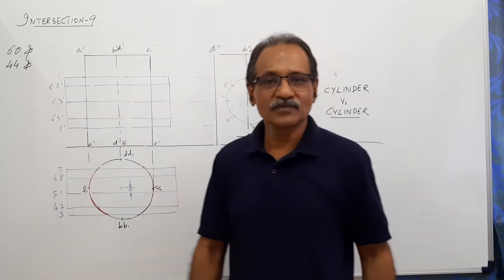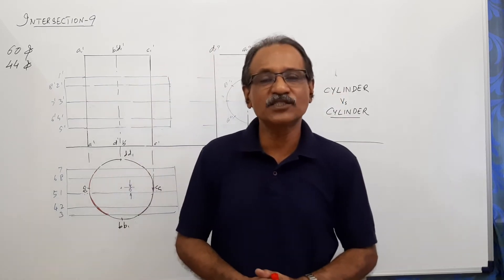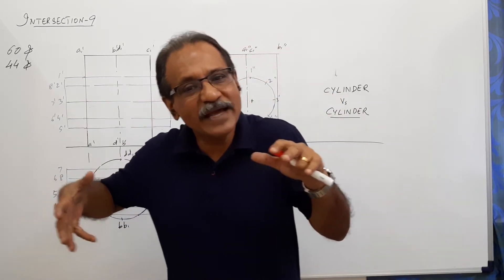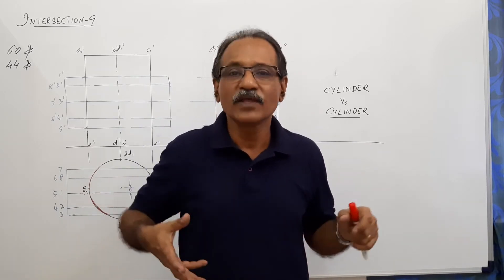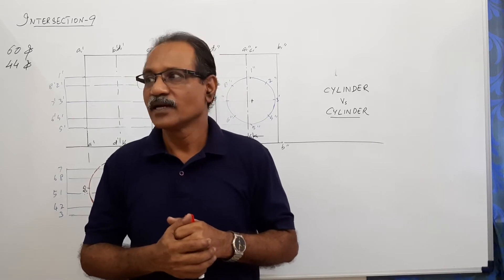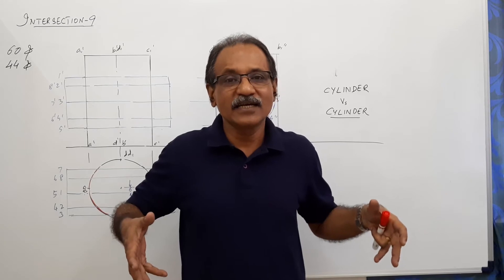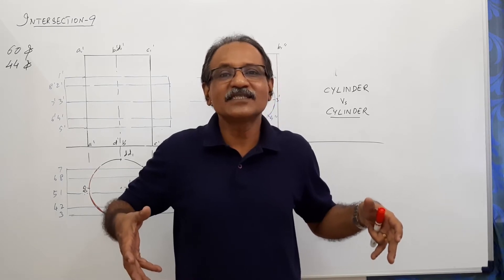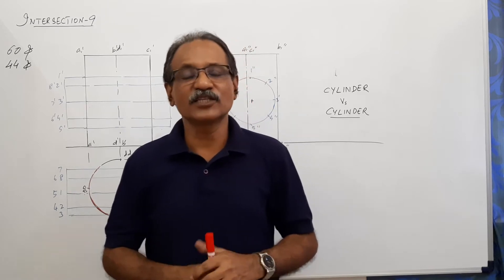In this problem, a vertical cylinder 60 mm diameter is standing on its base. This is penetrated by another cylinder 44 mm diameter horizontally with its axis parallel to both planes. The axis of the horizontal cylinder is such that it is 6 mm away from the axis of the vertical cylinder.